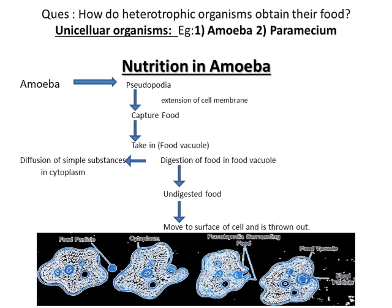Now we will discuss how heterotrophic organisms obtain their food, starting with unicellular organisms. Unicellular organisms are single-celled organisms like Amoeba and Paramecium. The shape of Amoeba is irregular because of the presence of finger-like projections over its body surface, known as pseudopodia. Pseudopodia are extensions of the cell membrane, and with their help, Amoeba captures food particles or its prey.